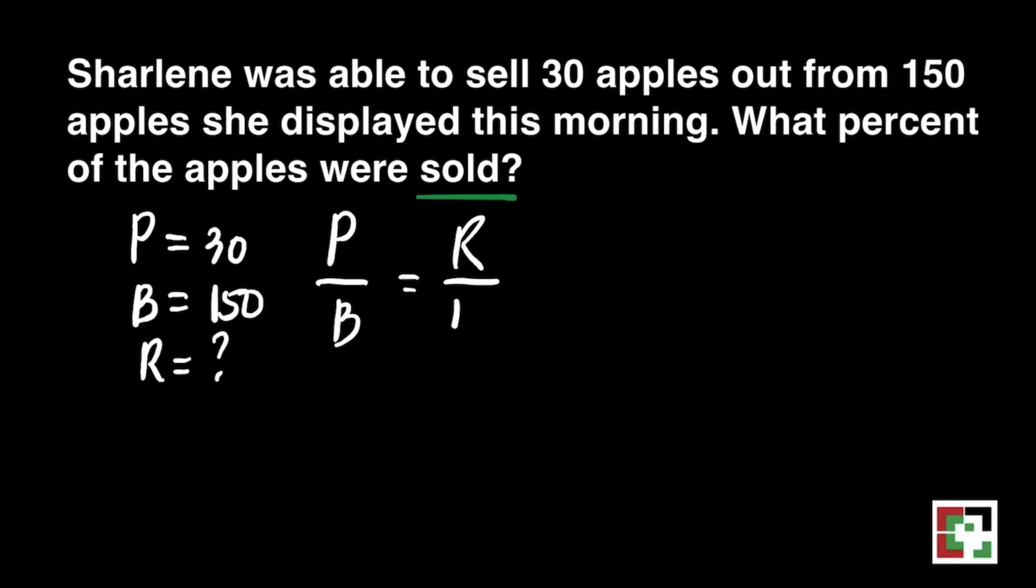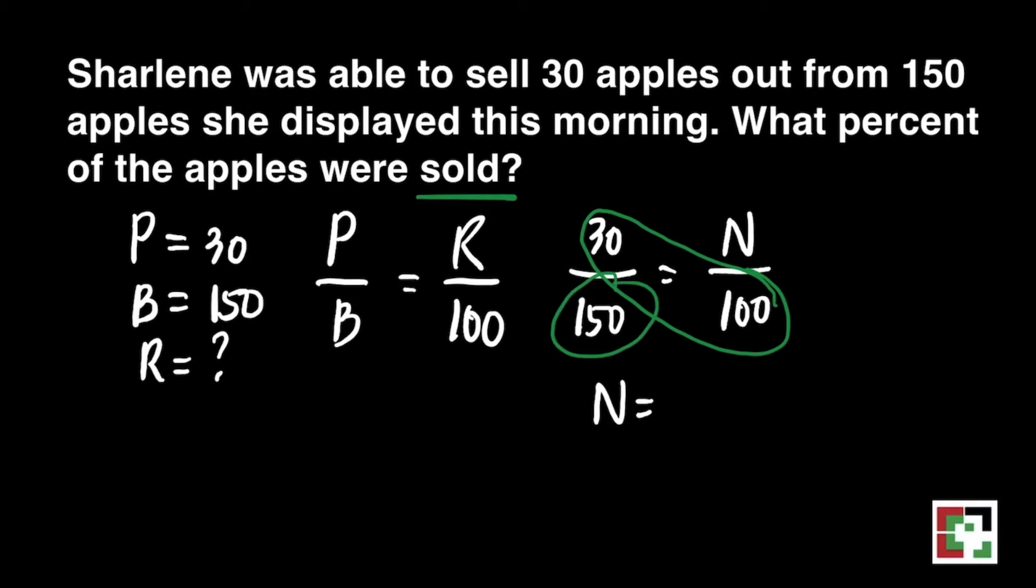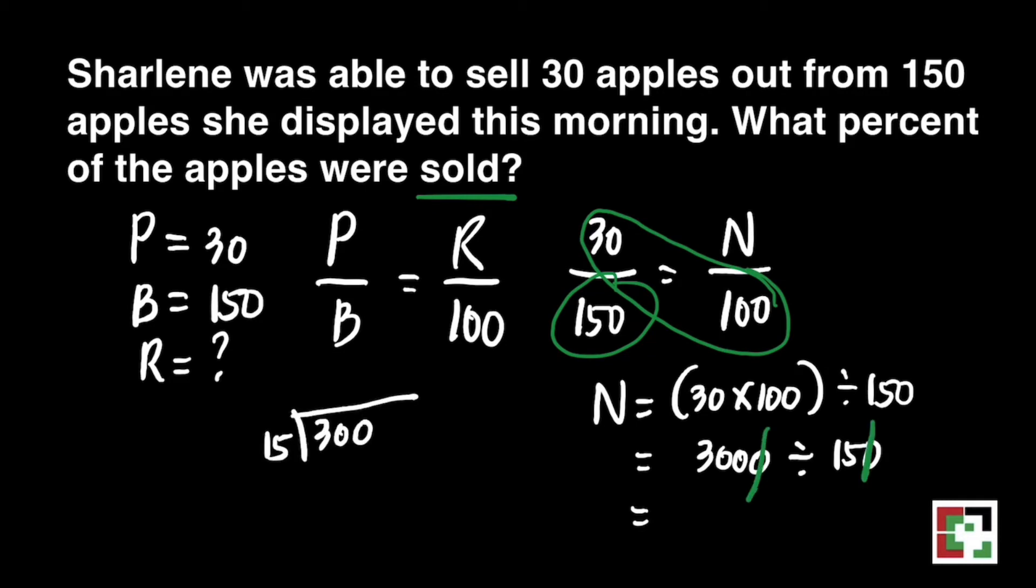So we'll still use the same formula, percentage over base is equal to rate over 100. Let's just substitute. How to look for N? Just do cross multiplication. That's 30 times 100 divided by 150. 30 times 100 is 3,000 divided by 150. Just cancel two zeros. That's 300 divided by 15. We'll have 20. It means 20% of the apples were sold.